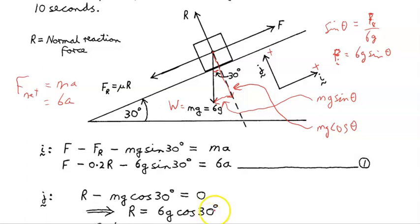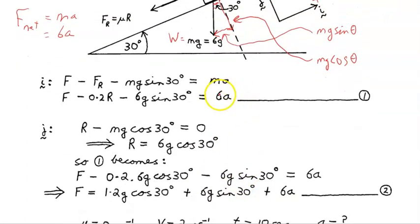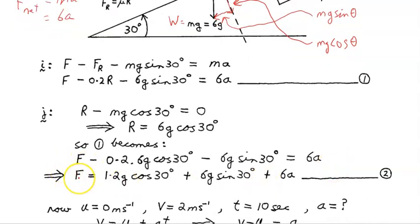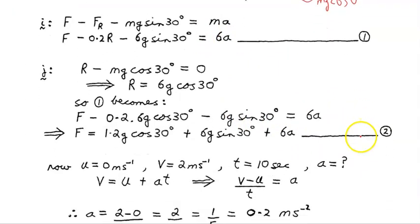Solving that second one, we get R equals 6G cos theta. If R is 6G cos theta, that means we can substitute into equation 1 where R is, we can put 6G cos 30 degrees. So that first equation becomes F minus 0.2 times 6G cos 30 degrees minus 6G sin 30 degrees is 6A. That means that F is 1.2 times G times cos 30 degrees plus 6G sin 30 degrees plus 6A, this unknown 6A, the net force acting on the system.